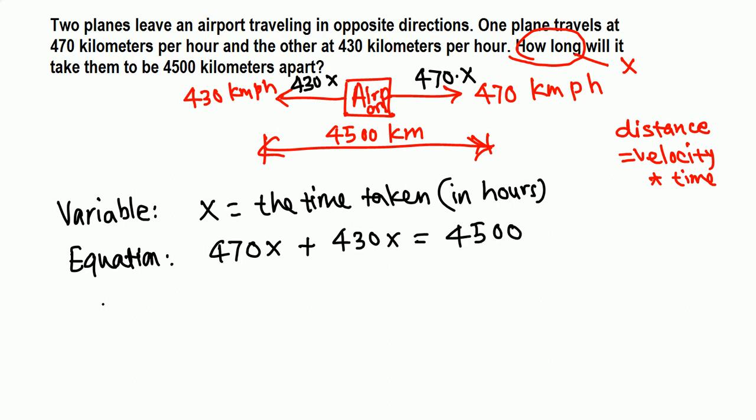Now we solve this equation for x and get the answer. 470x plus 430x, we add these two, we get 900x equals 4500. Now 900x divided by 900, x equals 4500 divided by 900, you get 5.